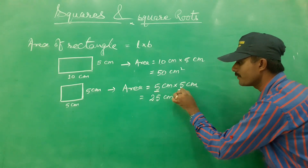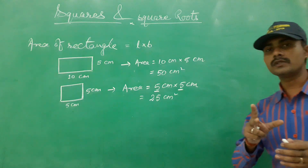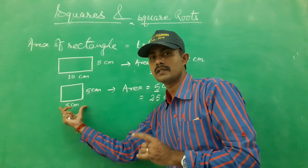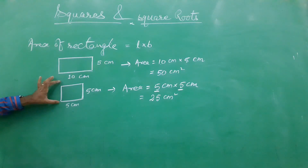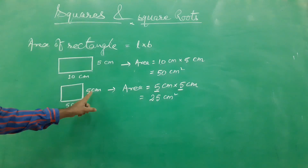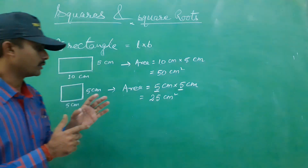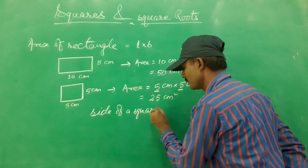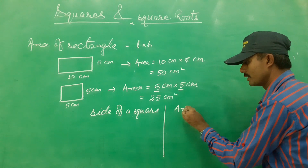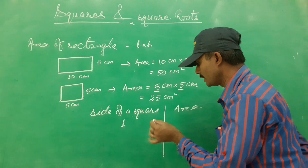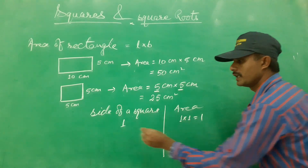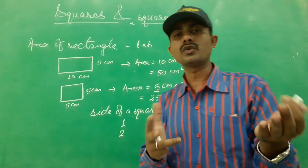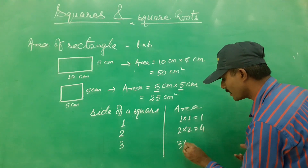Here we are using 5 into 5. If any number is multiplied with the same number, that is called the square of the number, because it represents the area of a square. So now I am writing some sides of a square. If the side is 1, the area is 1 into 1 equals 1. If the side is 2, area is 2 into 2 equals 4. If the side is 3, then 3 into 3 equals 9. In the same way we can find the square of any number.